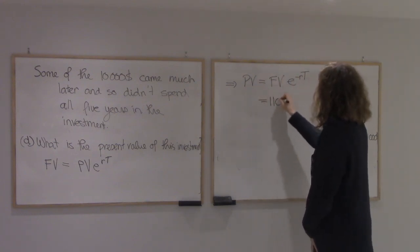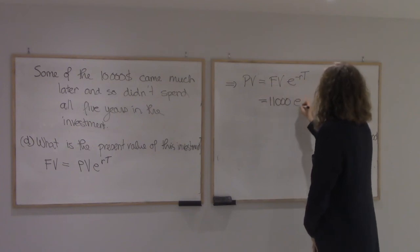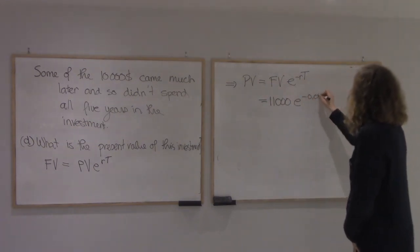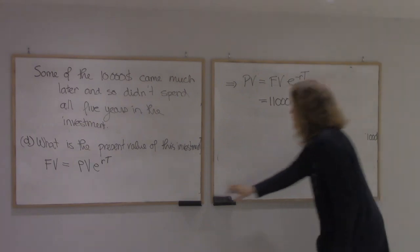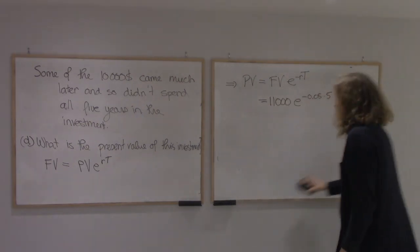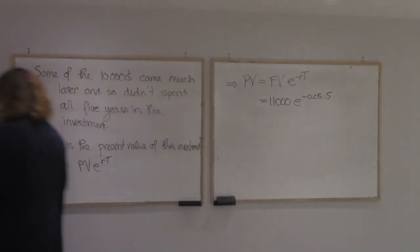And so that was 11,000 times e to the minus 0.05 times 5. I can erase this. And I computed it.